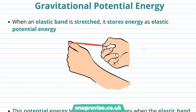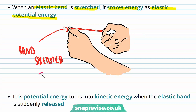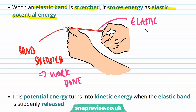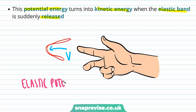We're going to define a new type of potential energy called gravitational potential energy. Recall that when an elastic band is stretched, it stores energy as elastic potential energy. As we stretch this band with our thumb, work is done on the band and this work done is stored within the band as elastic potential energy. This potential energy turns into kinetic energy when the elastic band is suddenly released — we can tell this because the band now has a velocity, which means it must have some kinetic energy.